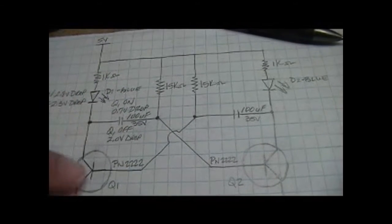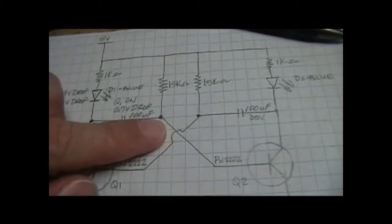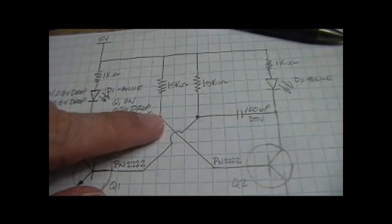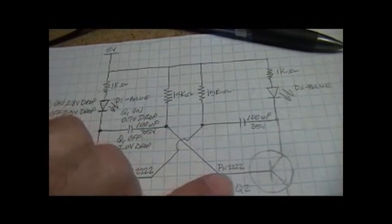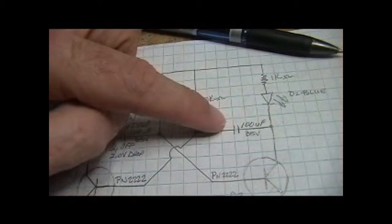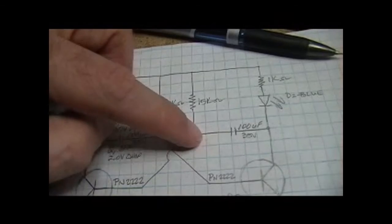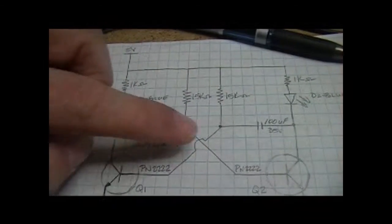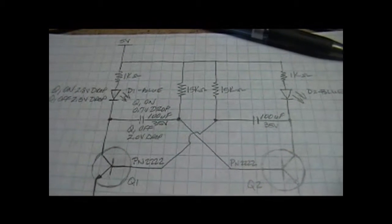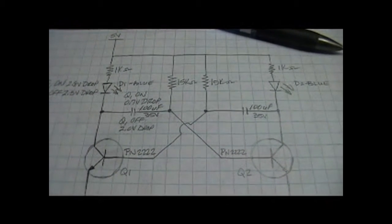When this one goes on, this goes negative 1.4 and gradually charges to 0.7. When it hits 0.7, that turns this transistor on, takes this to 0, takes this to negative 1.4, and turns this transistor off. And it starts charging here. So that's what's kind of going on in this circuit, back and forth.